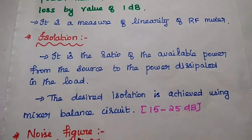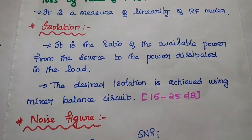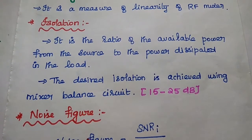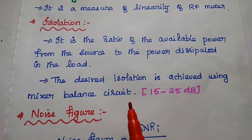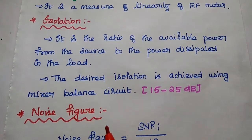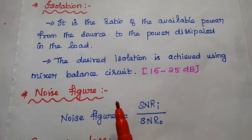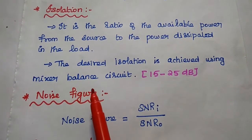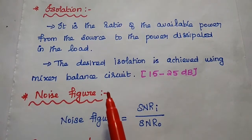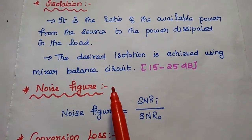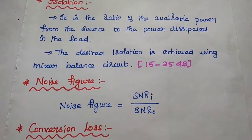Isolation is defined as the ratio of available power from the source to the power dissipated in the load. The desired isolation is achieved by using a mixer balance circuit, and its typical value is 15 to 25 dB.